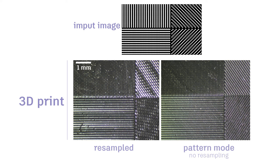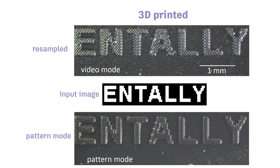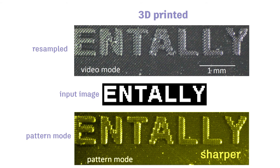The good news is that these projectors can also be operated in what's called pattern mode, where the individual micromirrors can be accessed directly without any resampling. Tiny text, less than one millimeter tall, can be printed much sharper, and fine patterns look smoother, like they ought to.